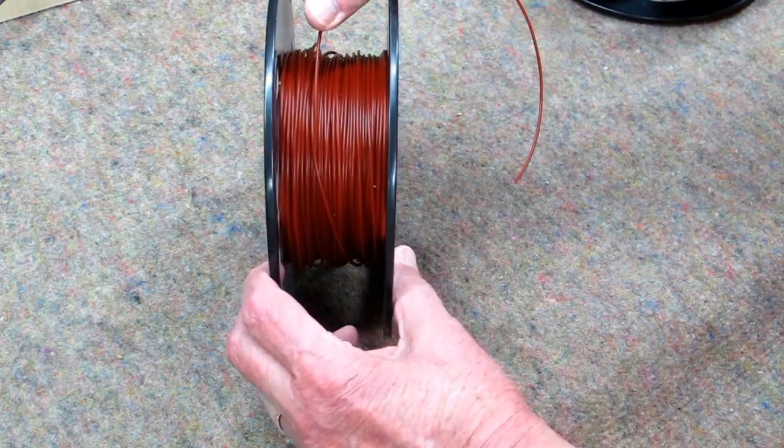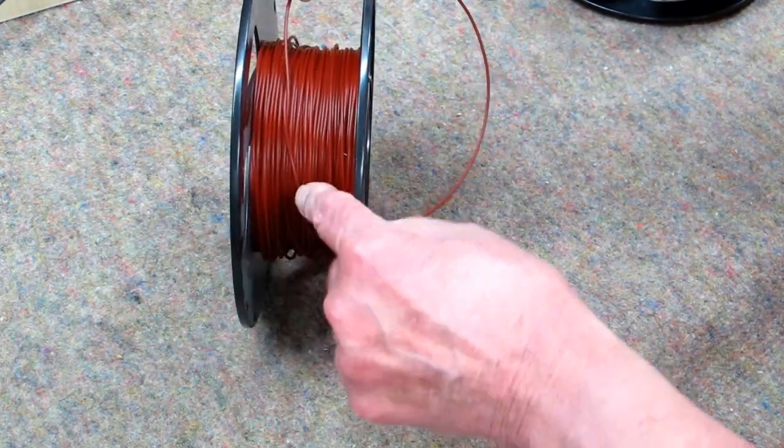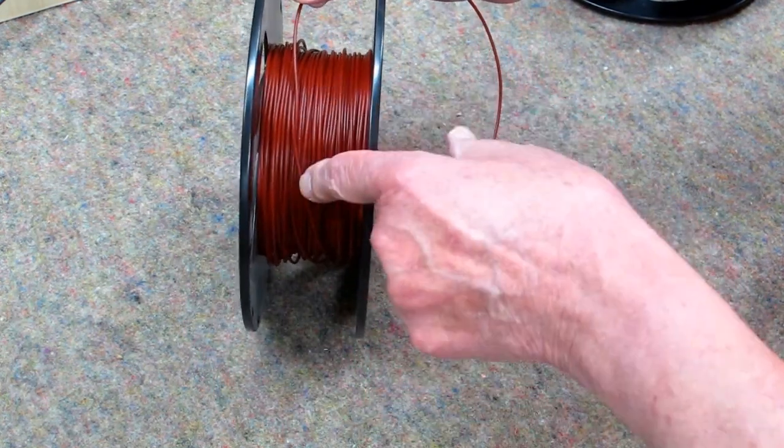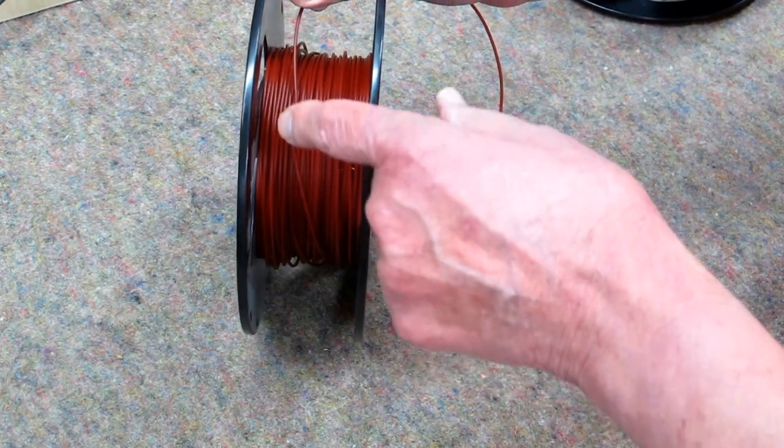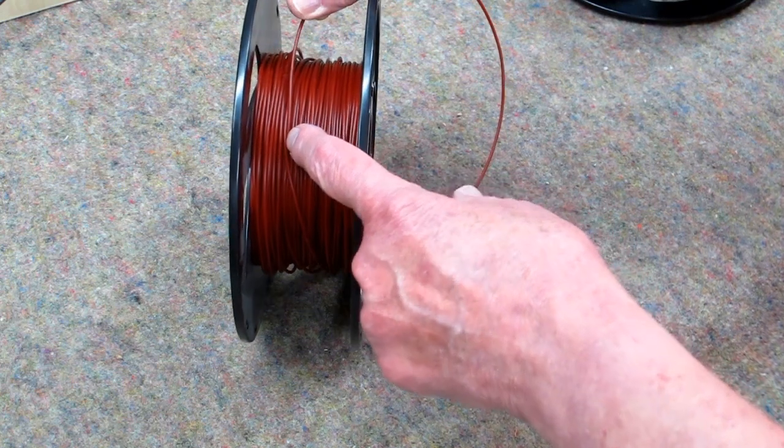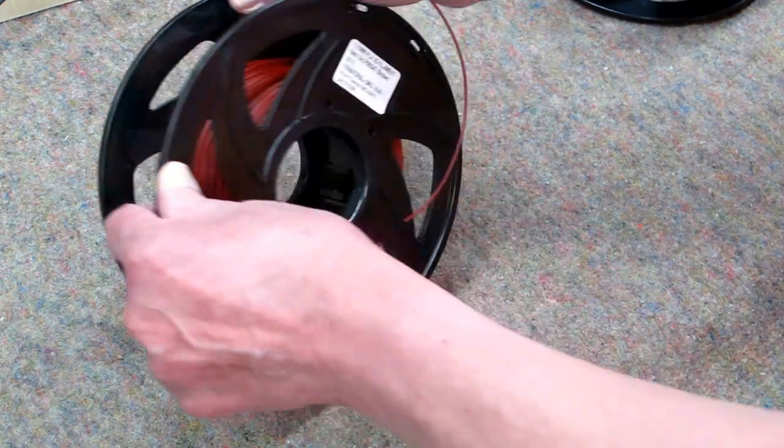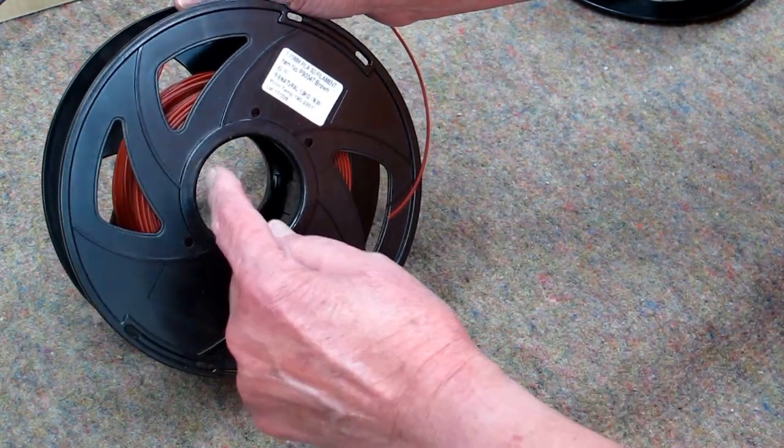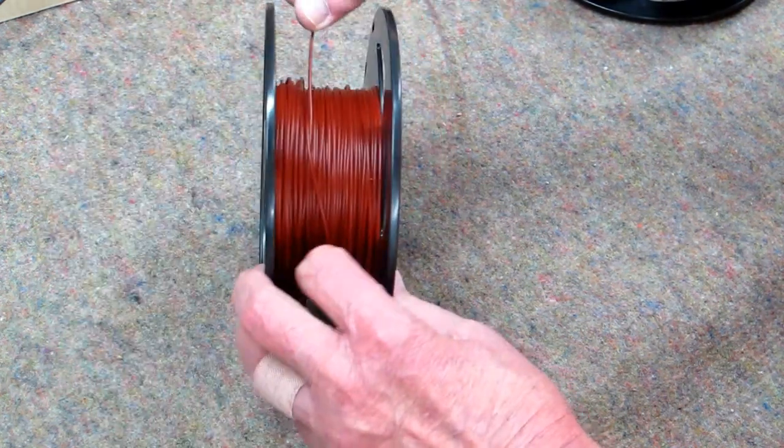And when your extruder is trying to pull on that, it can't because it's got like a half hitch here. And if the spool has this in one place, I have found it will have it in multiple places throughout the length of the filament. And that's a problem.